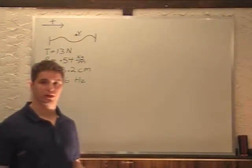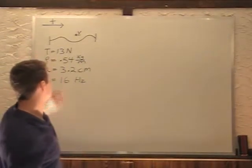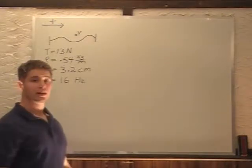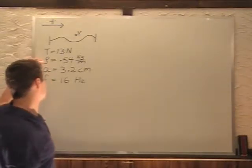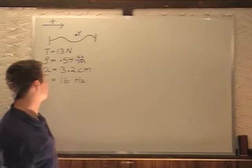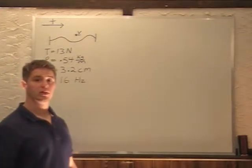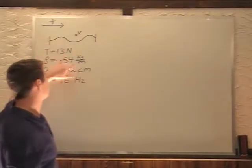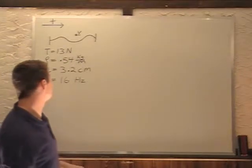In this problem we have a wave on a string. Now we're told this string has a tension of 13 newtons, that the mass per unit density of this string is 0.54 kilograms per meter.